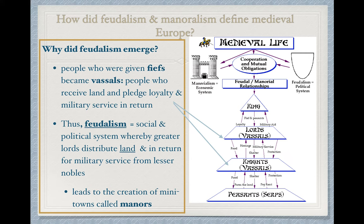Still on the question of why feudalism emerged — on the right, the people who were given those fiefs assumed a new title: vassal. They became a vassal to their higher lord. A vassal is a person who receives land and pledges loyalty and military service in return, as shown in the graphic. The king provides a lord with a fief and peasants to work it, and in return, the lord provides loyalty and military aid.